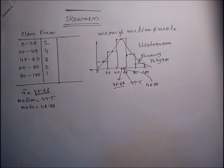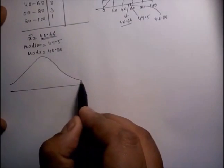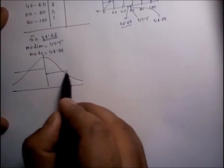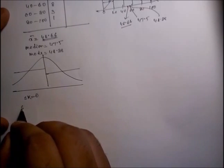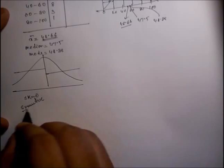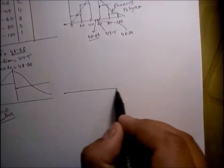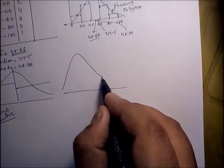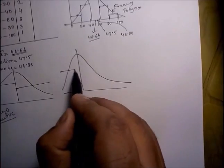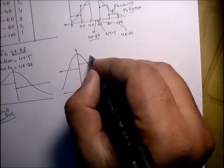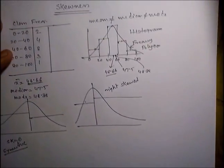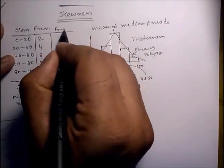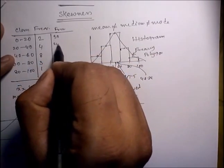Now, what is skewness? If the left part of a distribution is the same as the right part, we can say the skewness is 0 — it is symmetric. However, if the right part is much longer than the left part, then it is called a right-skewed distribution. Suppose the frequency is like: 30, 20...